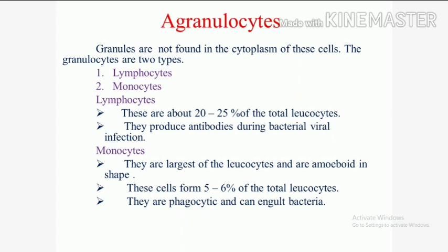Monocytes are the largest of the leukocytes and are uninucleated. These cells form 5 to 6% of the total leukocytes. They are phagocytic, meaning they engulf and destroy bacteria.